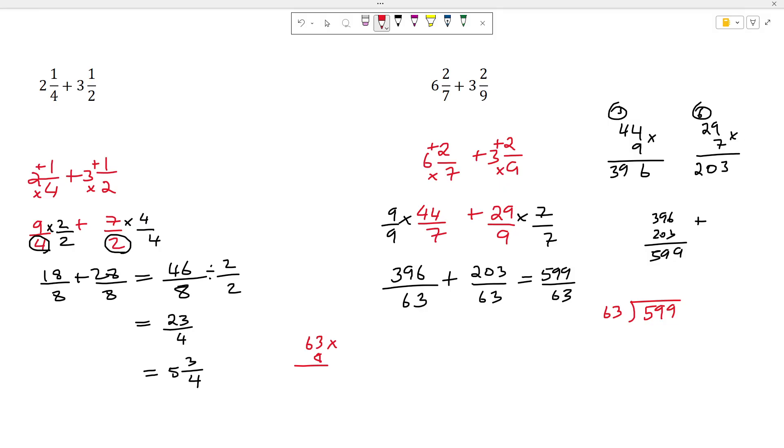63 times 8: 8 times 3 is 24, 4 down 2 on the top, 8 times 6 is 48, 50 and it will give us 504. Can it be more? Let's see 63 times 9. 9 times 3 is 27, 7 down 2 on the top, 9 times 6 is 54, 54 plus 2 is 56. So this is the nearest. We know 63 times 9 is going to give us 567. Now let's subtract it. 9 minus 7 is 2, 9 minus 6 is 3, 5 minus 5 is 0.